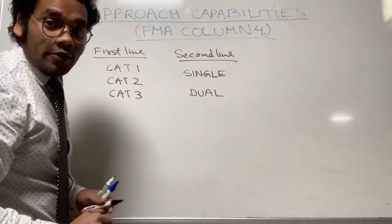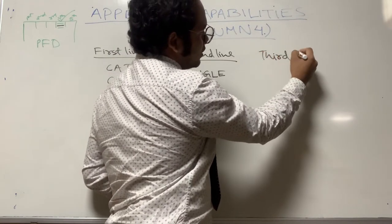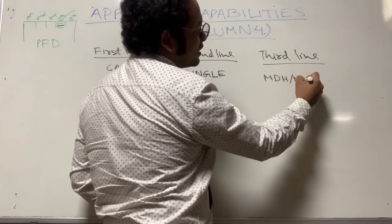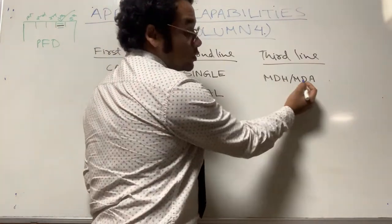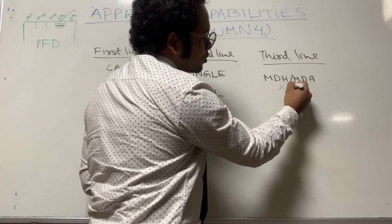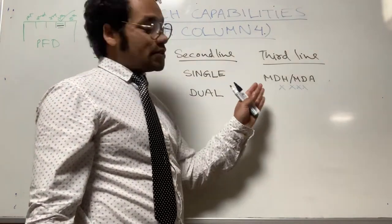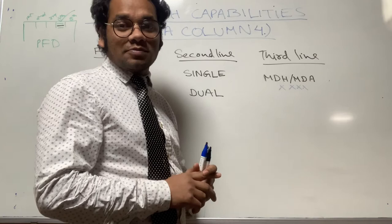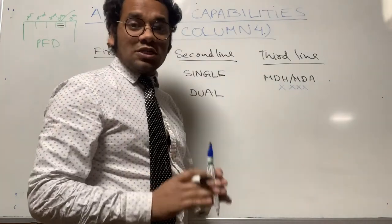Now let's discuss about the third line of the fourth column. In the third line we can get Minimum Descent Height or Minimum Descent Altitude. Whenever this FMA appears in the third line of the fourth column on the PFD, it appears in white color, and along with it some digits are also visible in blue color. These digits are the MDH or MDA values entered by the flight crew on the MCDU — that is the Multi-purpose Control and Display Unit — performance approach page.